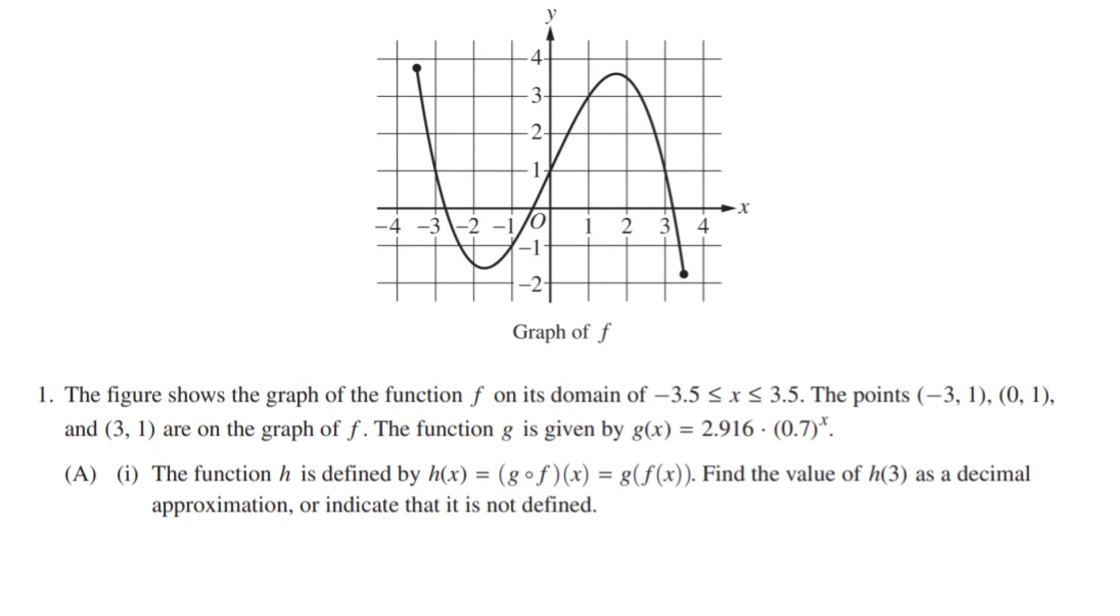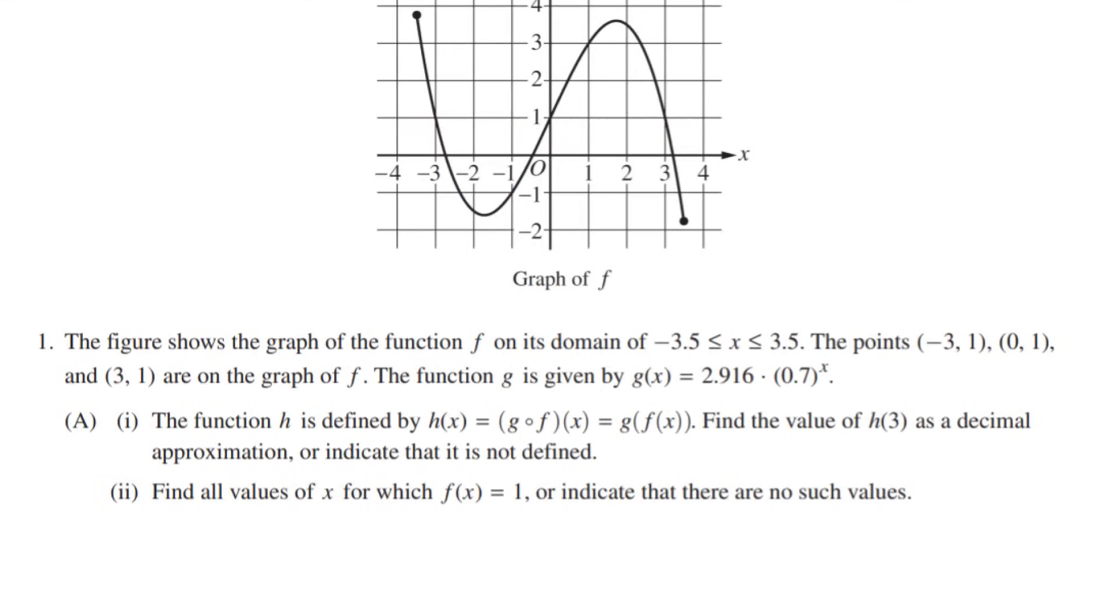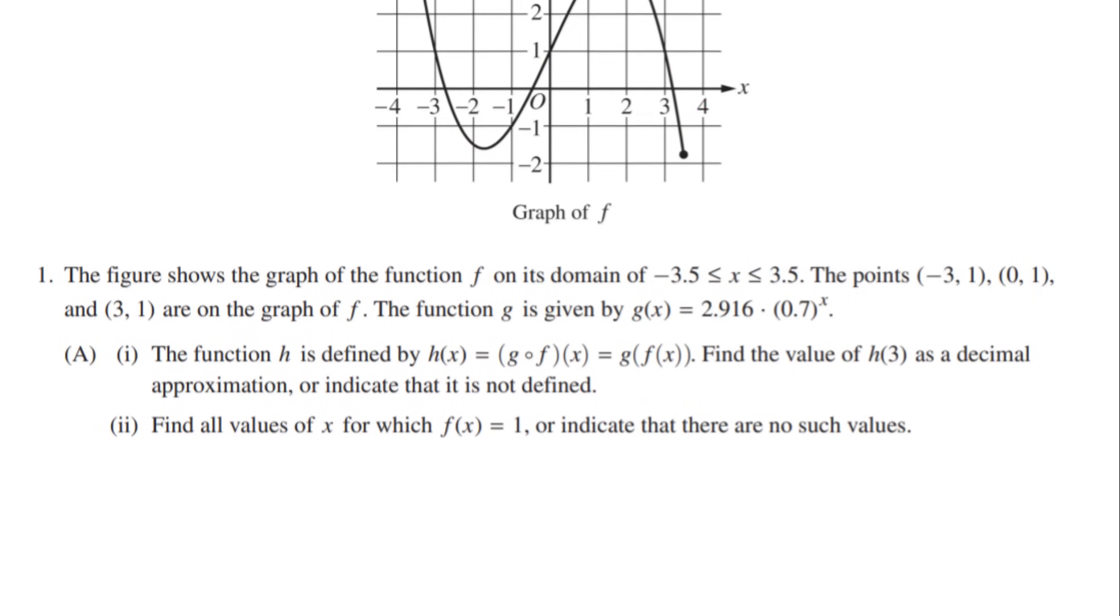Now, let's keep going and read over the next one. Find all values of x for which f of x is equal to 1, or indicate that there are no such values. Hey, look! An easy equation. So we are looking at what x values y equals 1 at on our graph. We see this in three spots: x equals negative 3, x equals 0, and x equals 3. And on to the next part.